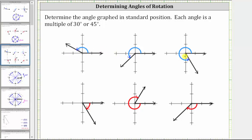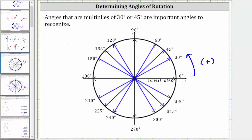If the terminal side is rotated clockwise, the angle is negative. So for a quick review: the initial side is along the positive x-axis, and if we rotate counterclockwise, then the angle is positive.